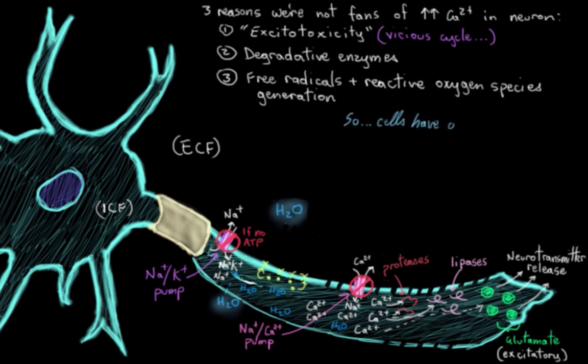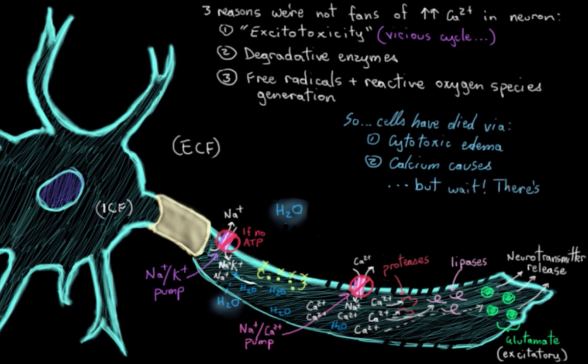So I described cells dying by cytotoxic edema and by calcium-dependent mechanisms, but there's also another important way that neurons can die after a stroke. You might be familiar with mitochondria, the organelle responsible for energy production in the cell.